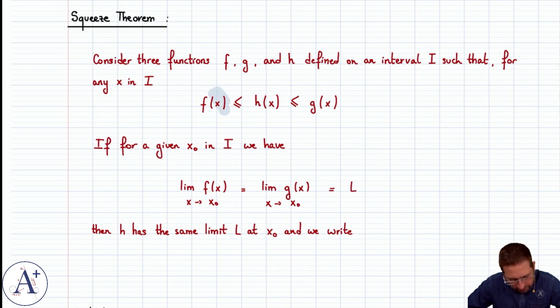Then f has a limit L, g has a limit L, and h has no choice but to have the same limit. So the limit as x approaches x-naught of h(x) is equal to L.